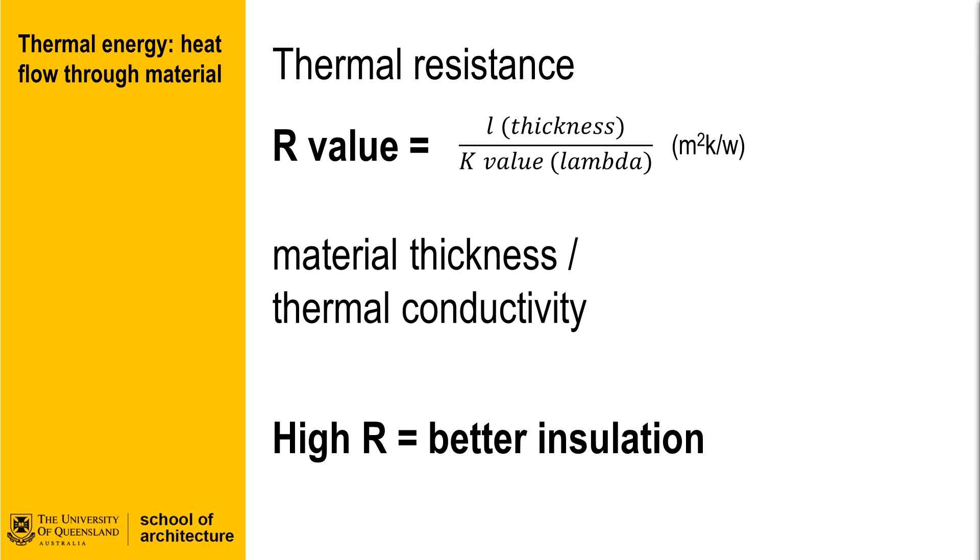The R value of a specific thickness of a material is defined as the thickness divided by the thermal conductivity, or K value of a material. The higher the R value for a certain material and thickness, the better thermal resistance and therefore better insulating properties.